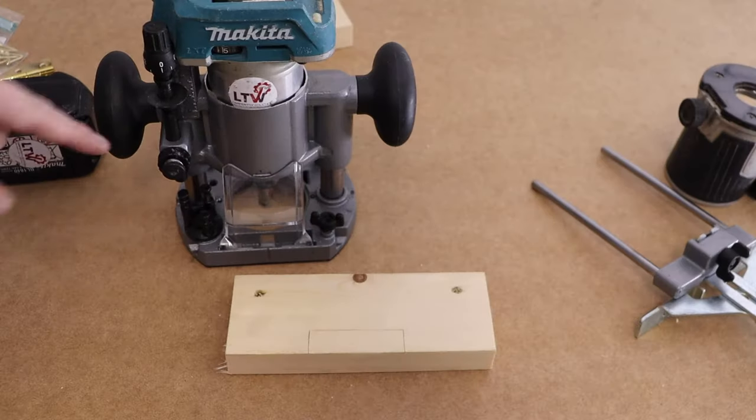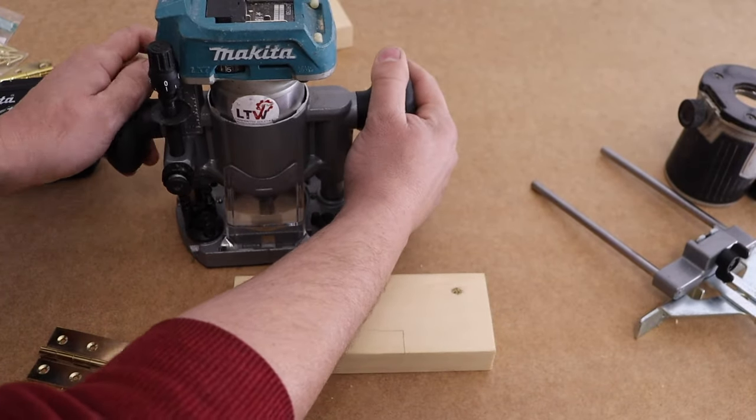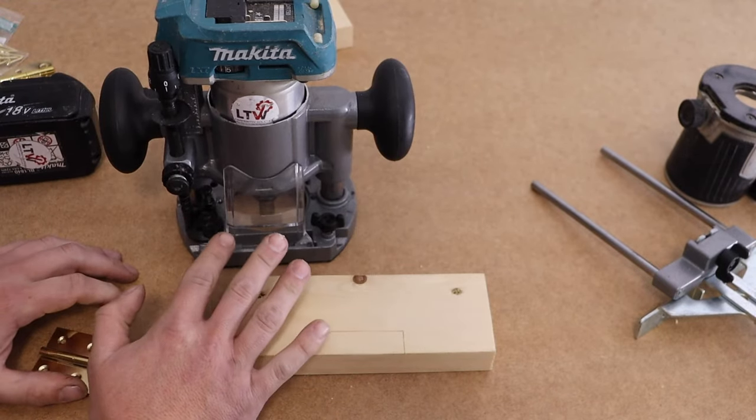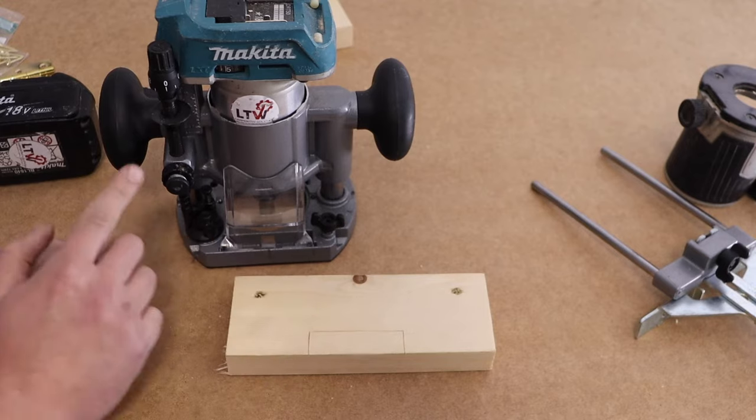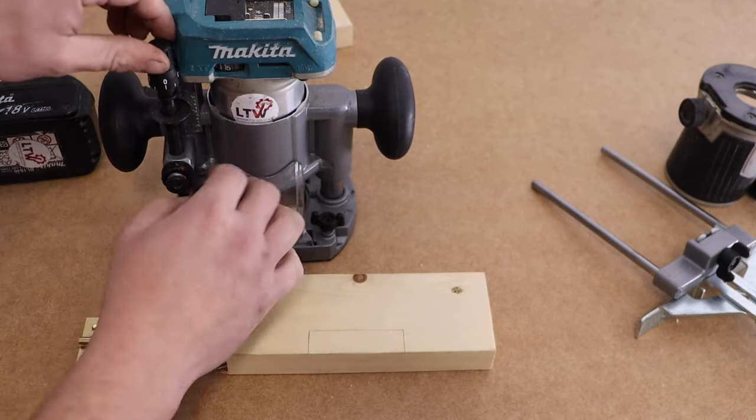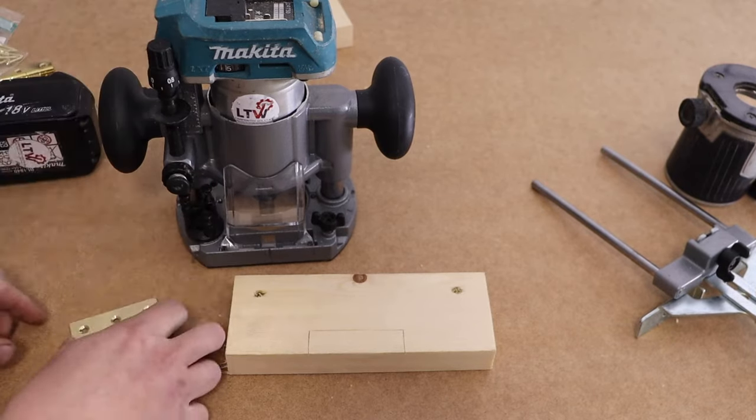But with this sort of plunge base, what you want to do is actually drop your router down onto a flat surface now and lock that off. Now that's effectively at zero, and then what we can do is we can use the turret system to set the rest of it.